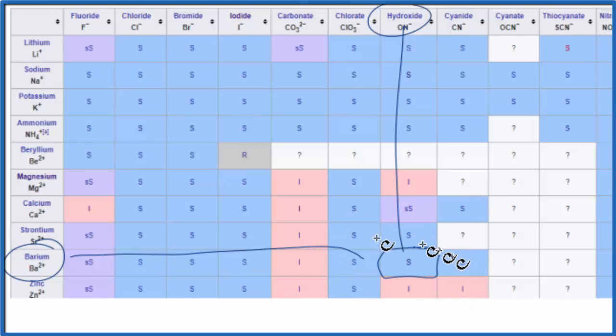And barium hydroxide is kind of in between. It is slightly soluble, but it's also a strong base. Let's take a look at that.